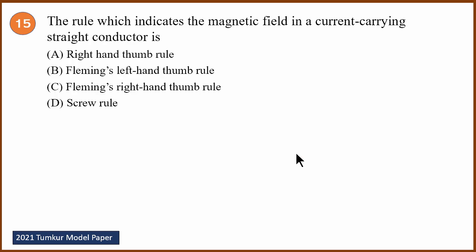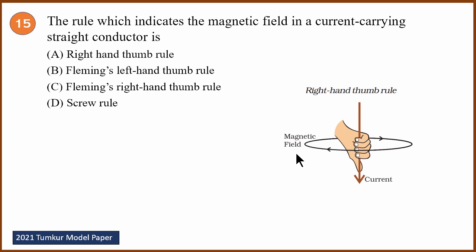Fifteenth question: the rule which indicates the magnetic field in a current-carrying straight conductor. The answer is A — the right hand thumb rule. This is from the textbook: the right hand thumb rule tells you the direction of the magnetic field around a straight current-carrying conductor.